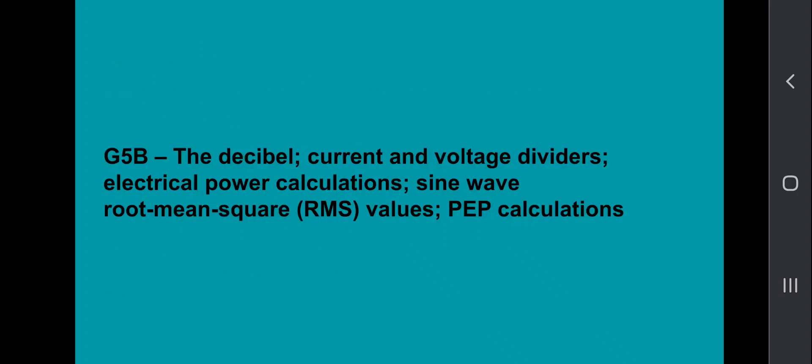G5B covers the decibel, current and voltage dividers, electrical power calculations, sine wave, root mean square values, and PEP calculations.